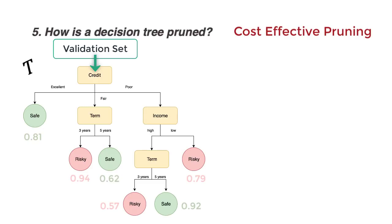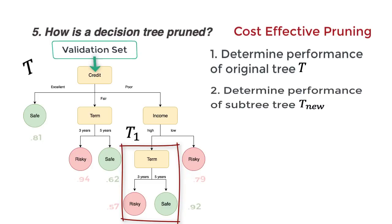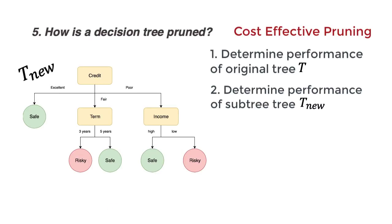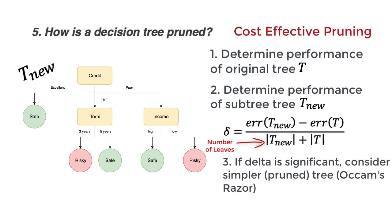Consider a method called cost-effective pruning. With the validation data, determine the performance of the original tree t. Now consider the subtree t1, and remove it from the original tree. Replace the subtree with a leaf. If the validation set doesn't have the significant difference in performance, we consider the simpler tree. Occam's razor comes to play here. If pruned, consider the pruned tree as the original, and continue to the next subtree.